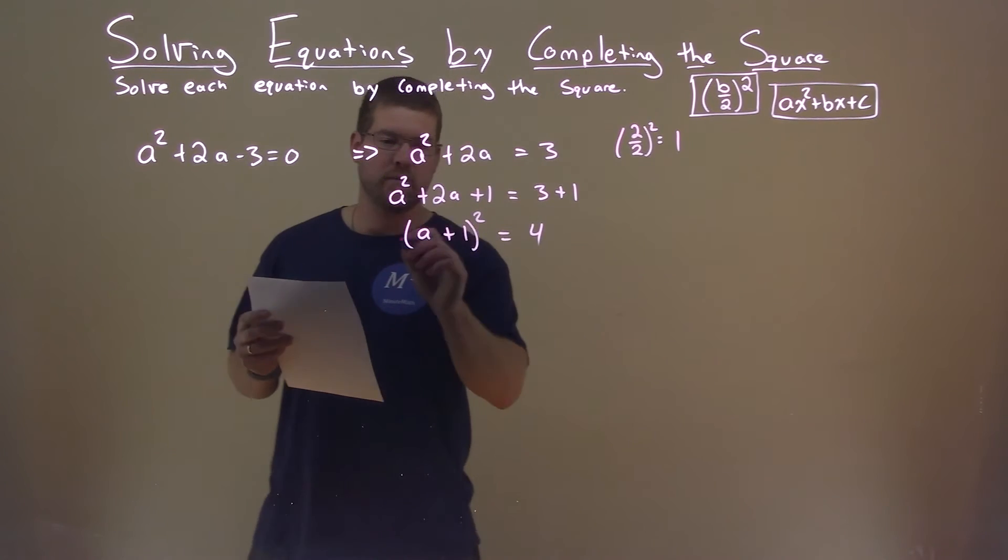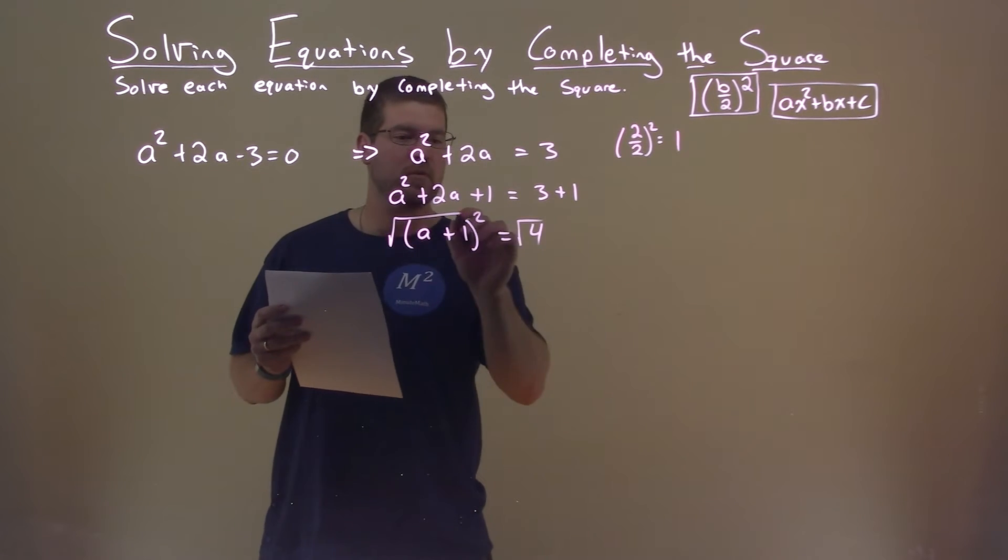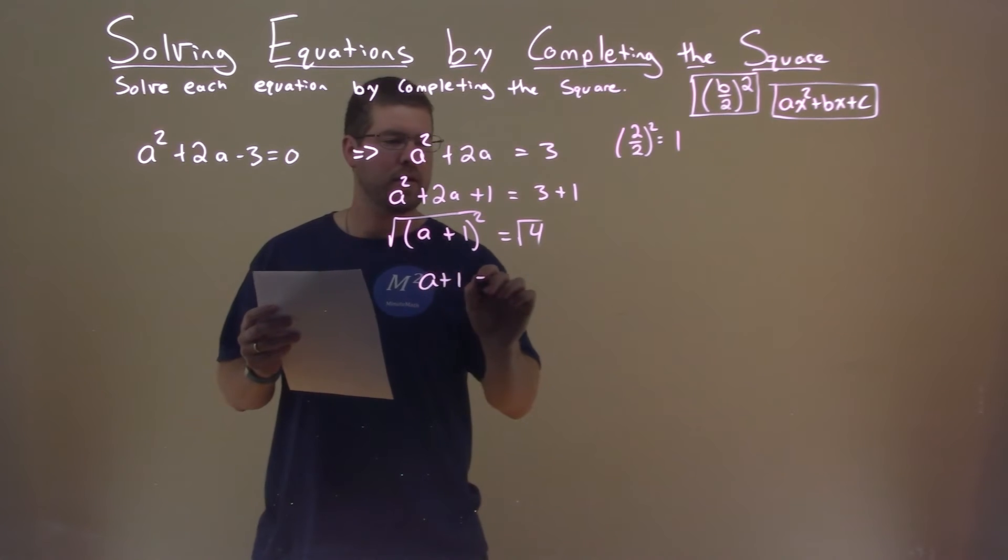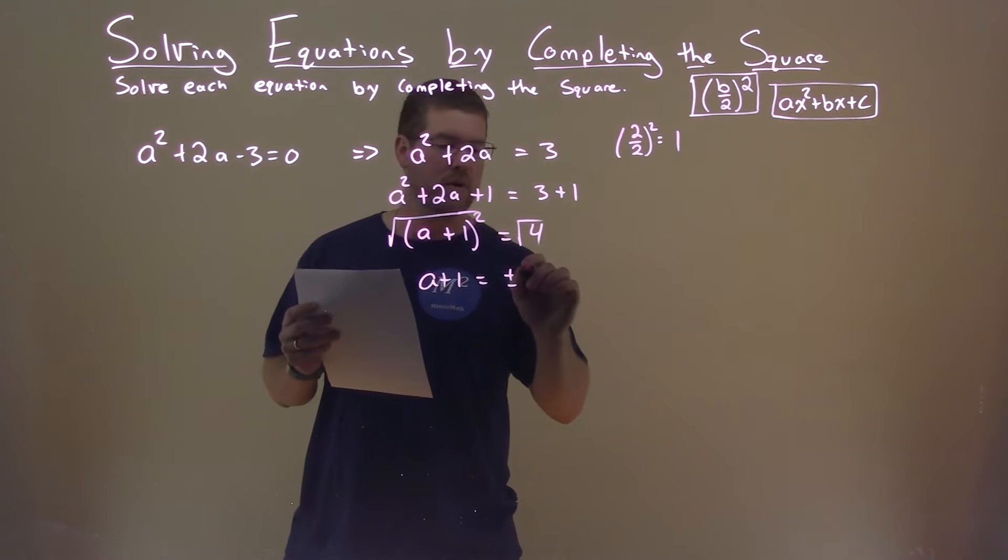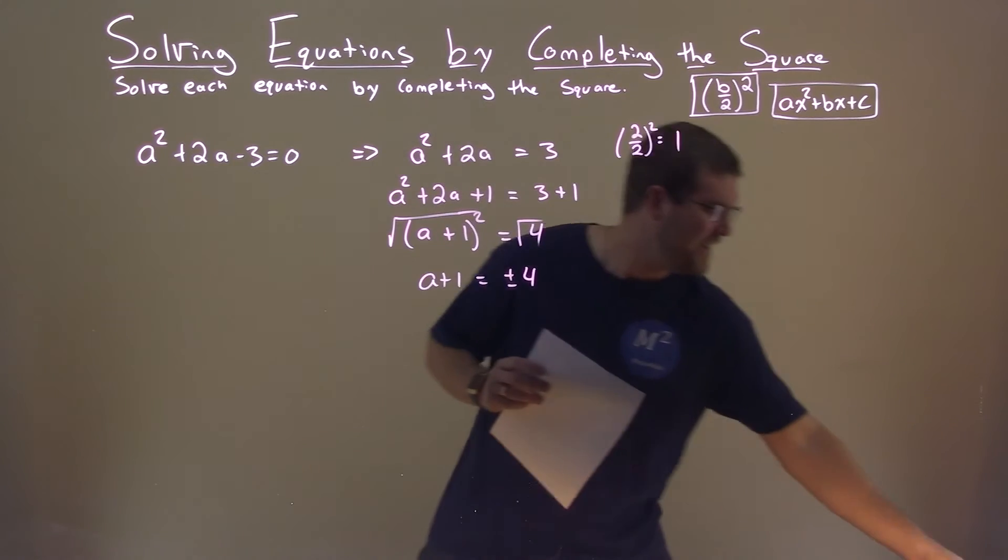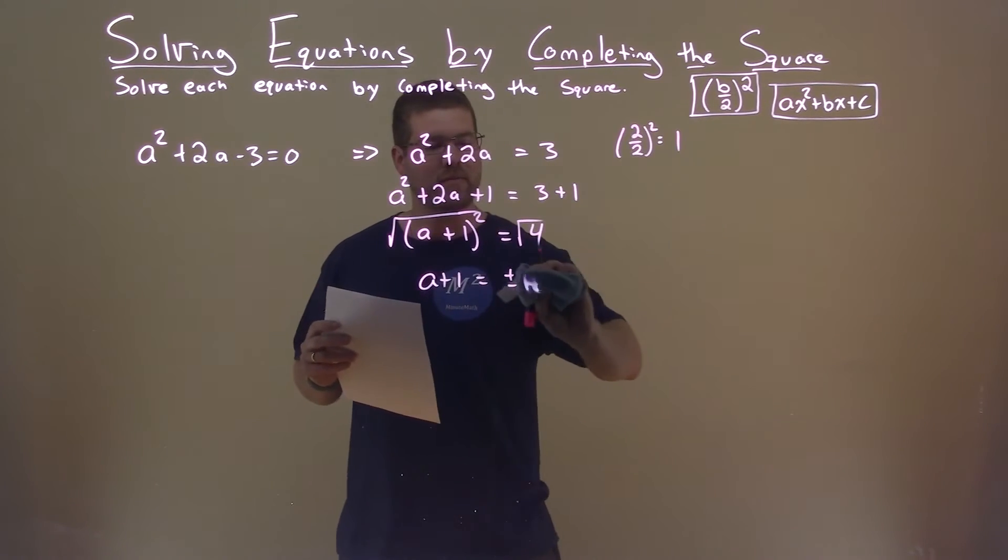We now can solve by taking the square root of both sides, and we have a plus 1 equals plus or minus, well, square root of 4 is 2. I got ahead of myself. 2.